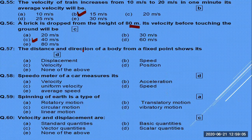Distance and direction of the body from a fixed point is basically position. A speedometer of a car measures speed only — no direction.